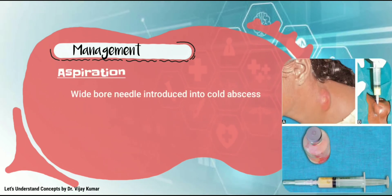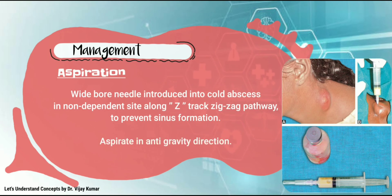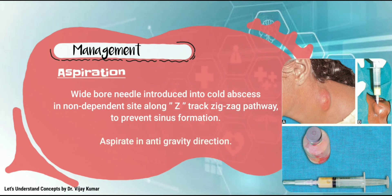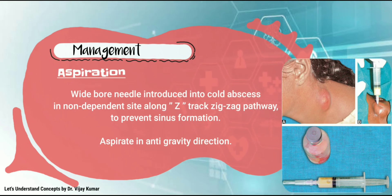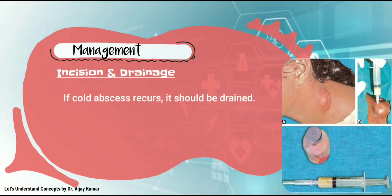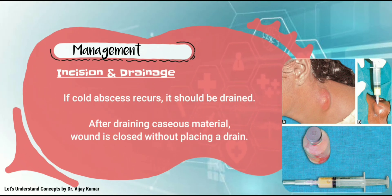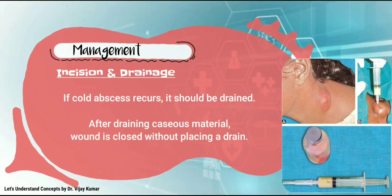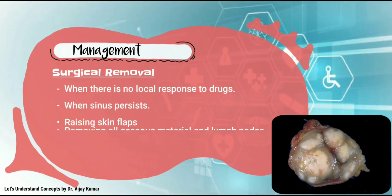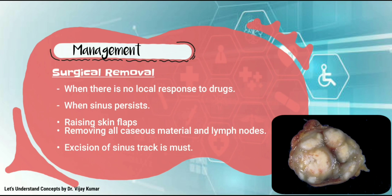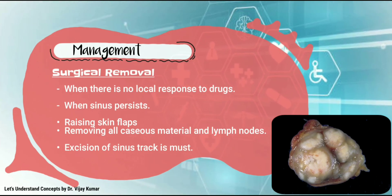Aspiration: a wide-bore needle is introduced into the cold abscess at a non-dependent site along a Z-track zigzag pathway to prevent sinus formation, and aspiration is done in an anti-gravity direction. Incision and drainage: if the cold abscess recurs, it should be drained. After draining the caseous material, the wound is closed without placing a drain. Surgical removal is indicated when there is no local response to drugs and when a sinus persists. Skin flaps are raised, all caseous material and lymph nodes are removed, and excision of the sinus track is mandatory.